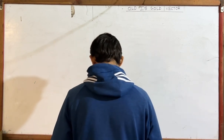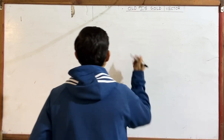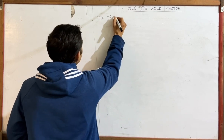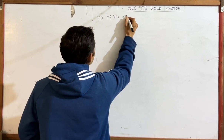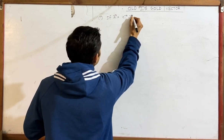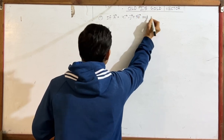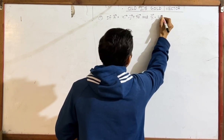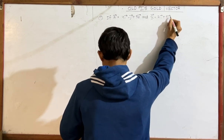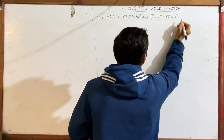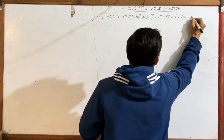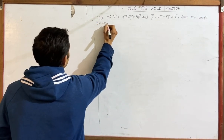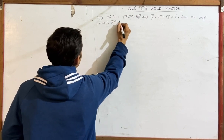This is an angle-find question. So let's start. Question first: if A vector is equal to 4i vector minus j vector plus 3k vector, and B vector is equal to 7i vector plus 5j vector plus k vector. Find the angle between A vector and B vector.